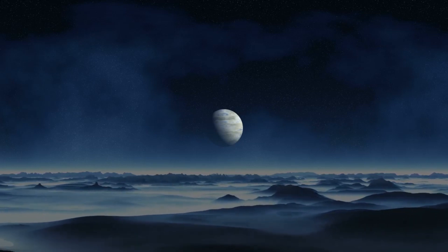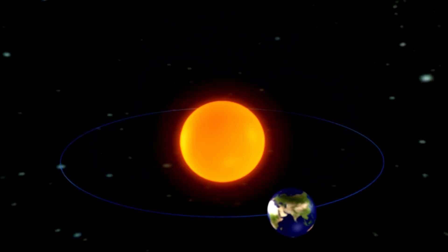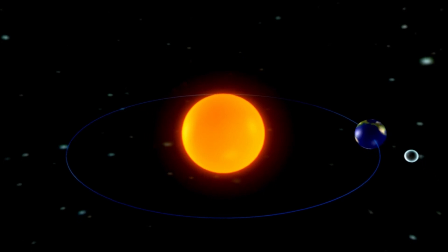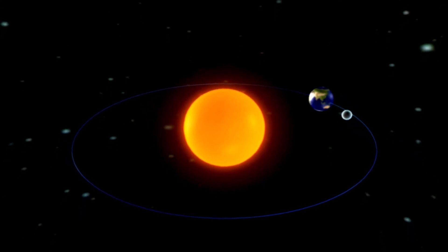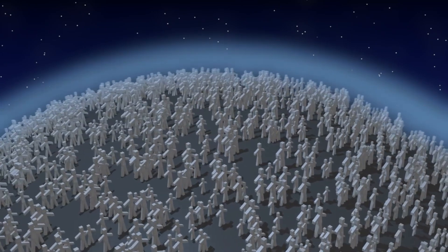The exoplanet strongly suggesting it may be an ocean world is an extraordinary revelation that deepens the mystery surrounding potentially habitable planets beyond our solar system. The exoplanet in question is K2-18b, a celestial body that has already intrigued astronomers for years. This new discovery has only intensified interest in the planet, as it offers the tantalizing possibility of life-supporting conditions.